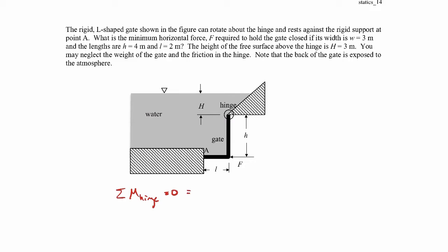Let's set up a coordinate system with Y acting downward from the free surface and X acting horizontally, which means Z is coming out of the page. The applied force F will create a negative moment in the Z direction, and the moment about the hinge will be negative little h times F, because the moment arm is little h. That creates a moment in the negative Z direction.